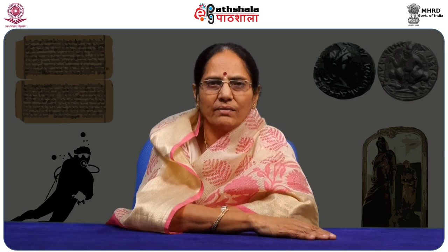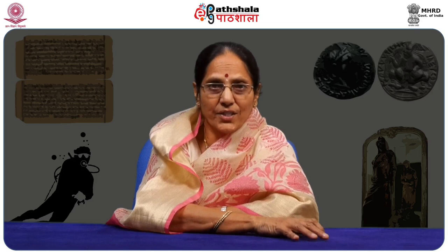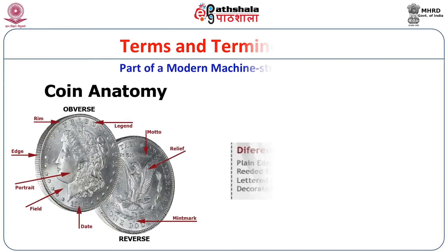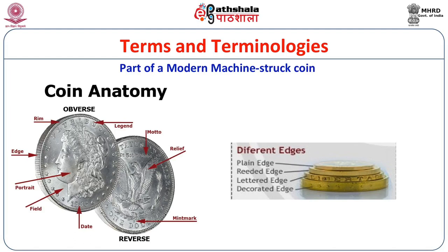Till now we have seen what a coin is, what is obverse, what is reverse, die, die striking, different edges, and mint marks. Now, the detailed description of coin anatomy: parts of a modern machine-struck coin include the reverse and obverse. On the obverse coin you can see the rim, legend, edge, portrait, field, and date; and on the reverse side the motto, relief, and mint mark. You can also see the different types of edges for a coin: plain edge, reeded edge, lettered edge, and decorated edge.